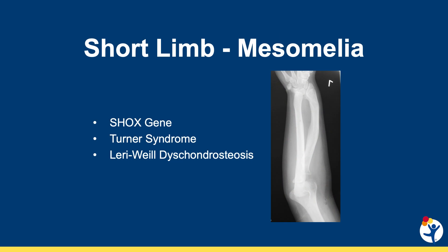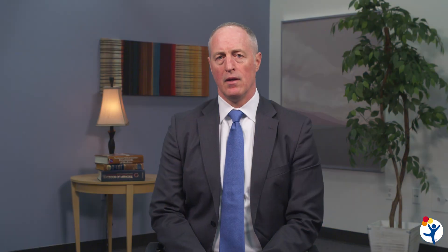The mesomelic disorders are generally less common and involve SHOX gene abnormalities. Turner syndrome, in which one of the X chromosomes is missing entirely and therefore missing one allele of the SHOX gene, is the most common form of short-limbed mesomelia. Leri-Weill dyschondrosteosis is a gene variant in which the SHOX gene is mutated and presents in both alleles.